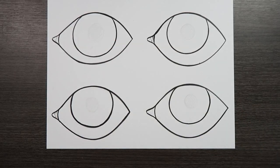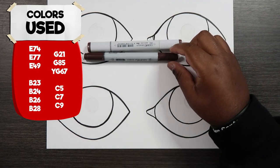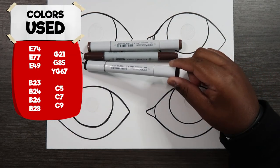For the brown eye I'm going to be using E74, E77, and E49.